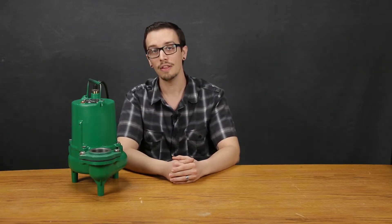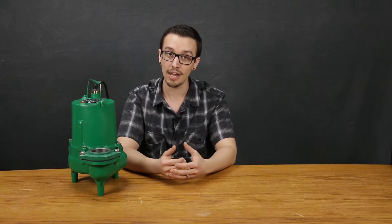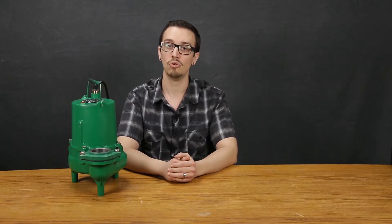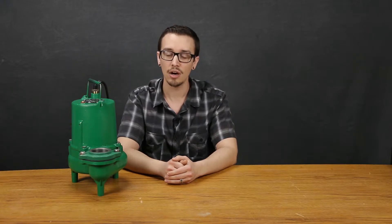The Myers MSK50 boasts a half horsepower motor that comes in 115 or 230 volts and is rated at 12 or 6 full load amps respectively. At the standard 1750 RPM, the pump can produce 24 feet of head and a maximum flow rate of 115 gallons per minute.